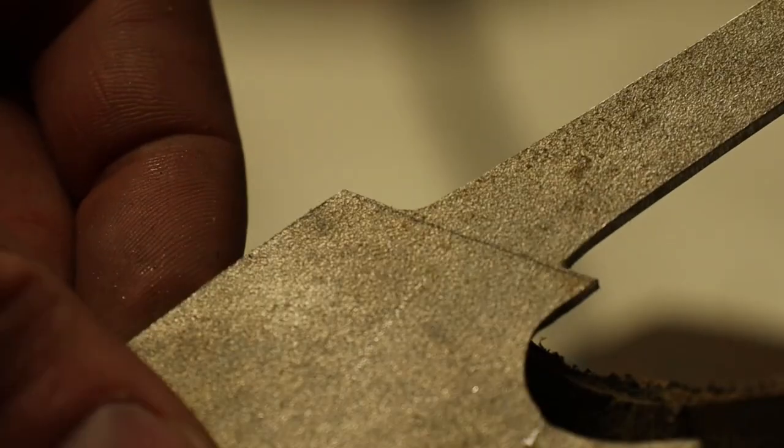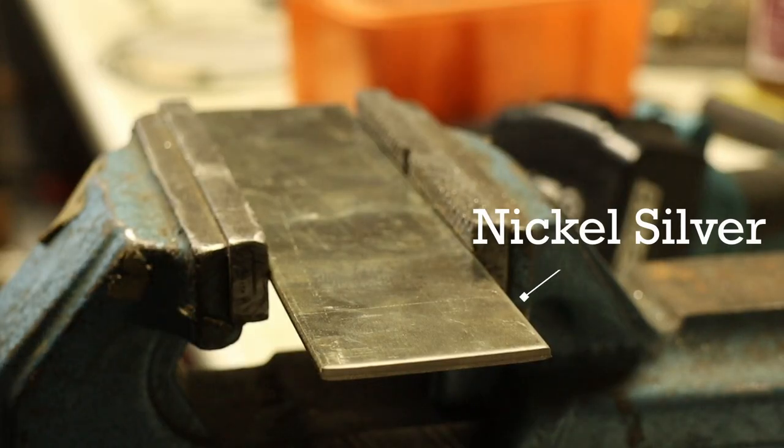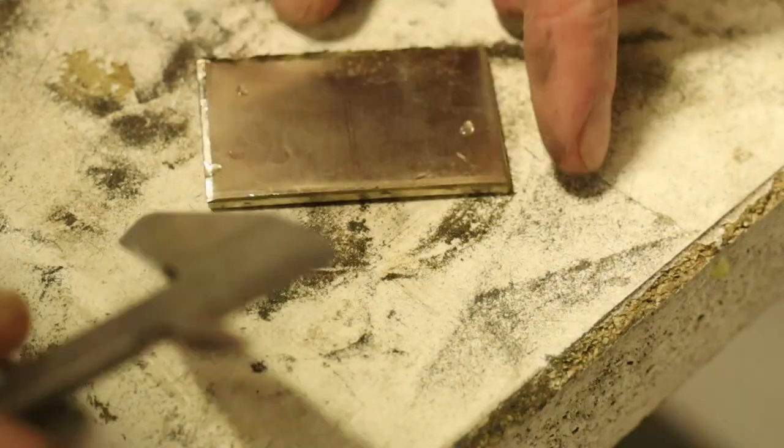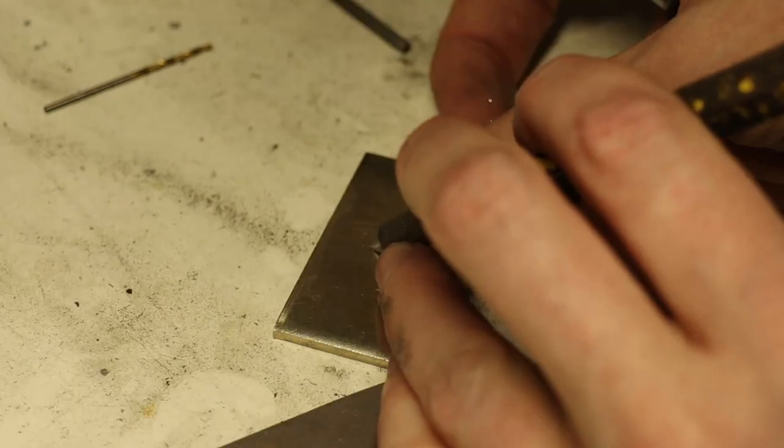Now that the rough shape was done I went over to the bolster. For this I chose nickel silver because of its high corrosion resistance and it just looks classier than stainless steel. Because the blade will have a rather simple design I wanted to try something different with the bolster. But first I had to drill a hole for the tang.